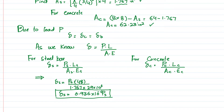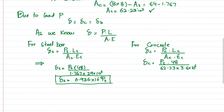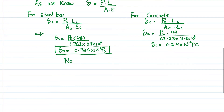For concrete: δ_c = P_c × 48 / (62.23 × 3.6 × 10⁶). From here, the deformation in concrete comes out to be 0.214 × 10⁻⁶ × P_c. Now we have δ_s and δ_c expressed in terms of P_s and P_c.